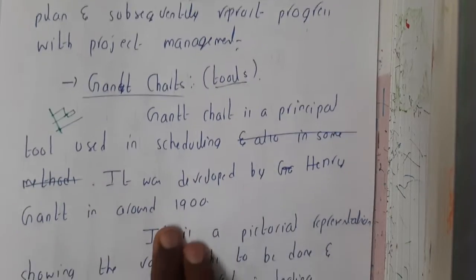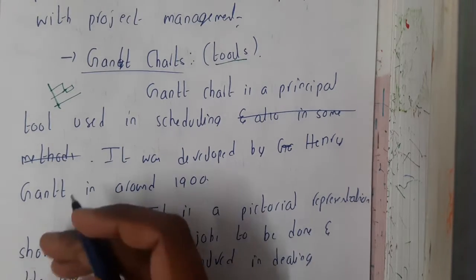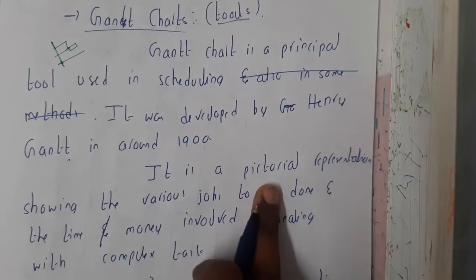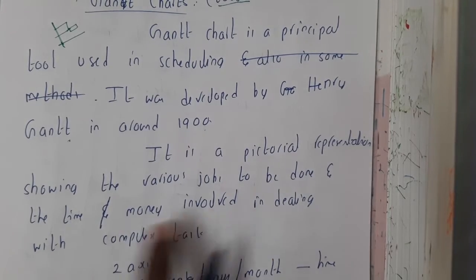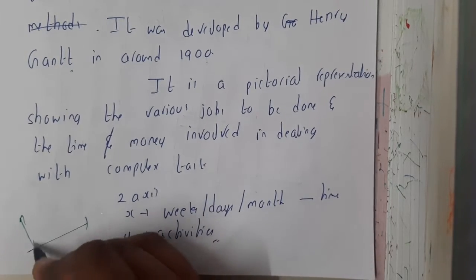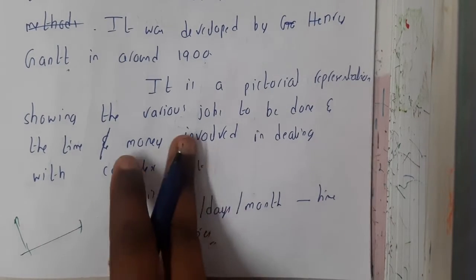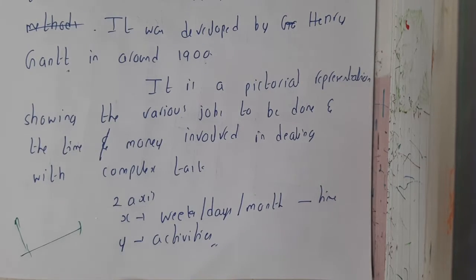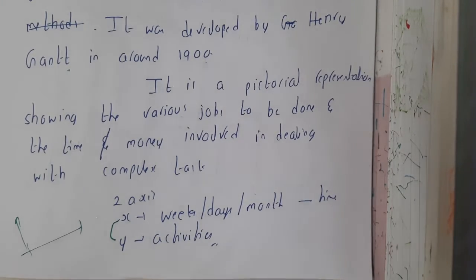The Gantt chart is a principal tool used in scheduling. It was developed by Henry Gantt in the 1900s, and it is named after him. It is a pictorial representation showing the various jobs to be done in a particular amount of time, or the money involved in dealing with complex tasks. It is a 2D graph with an x-axis and a y-axis. The x-axis specifies weeks, days, or months with respect to time — or money in rupees, dollars, etc. — and the y-axis lists the activities.